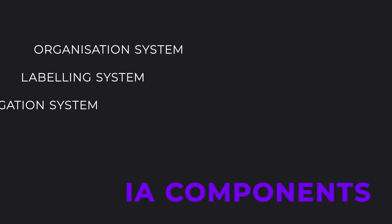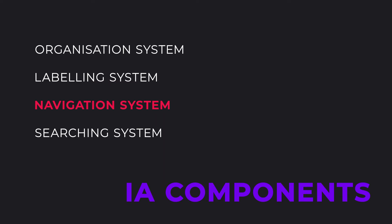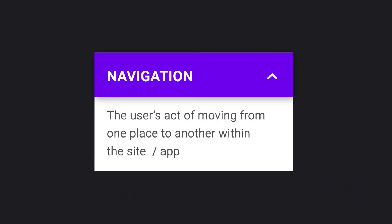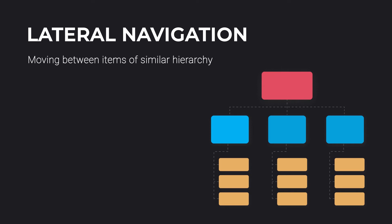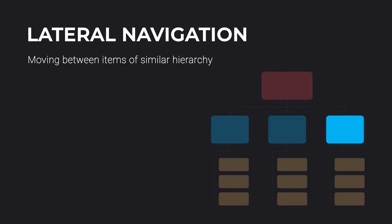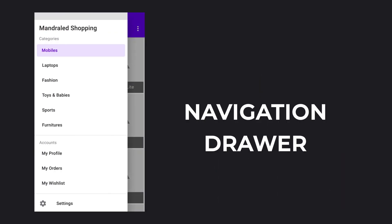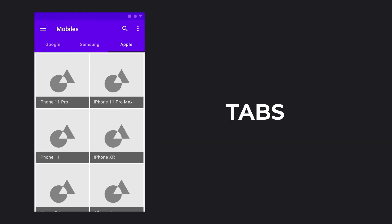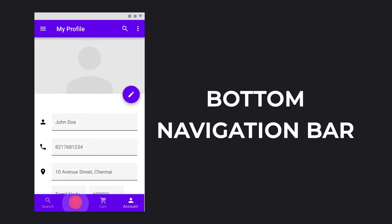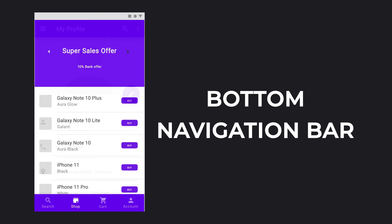Then we move on to a much broader but interesting component known as the navigation system. Navigation is the user's act of moving from one place to another within the site or app. According to Google's material design, there are three types of navigation: lateral navigation, forward navigation, and reverse navigation. Lateral navigation is where you move between items of similar hierarchy or related items in a set. For example, the movement of a user between items in a nav drawer, or the navigation of a user from one tab to another. You might also see this lateral navigation when the user moves from one section to another using the bottom navigation bar.